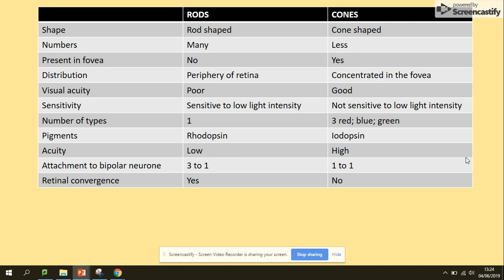The main differences between those: in terms of shape, the rod cells are rod-shaped, cones cone-shaped. In terms of numbers, we've got many rod cells, less cone cells. Cone cells are present in the fovea; rod cells are not present there. Distribution: periphery of retina for rod cells, cone cells are in the fovea.